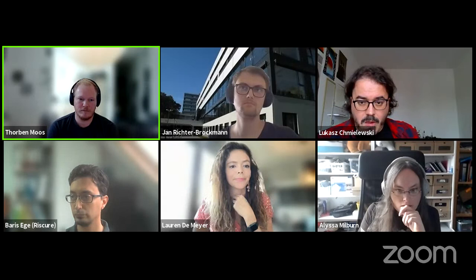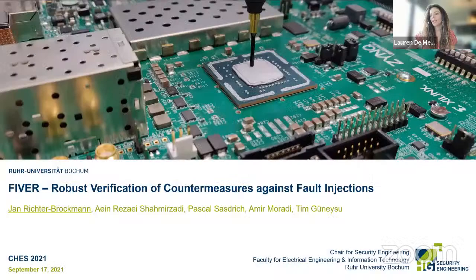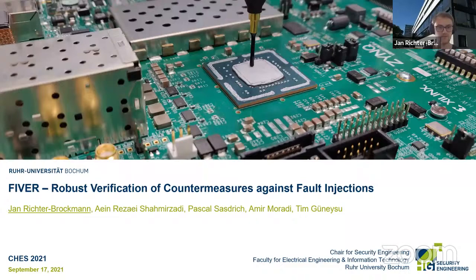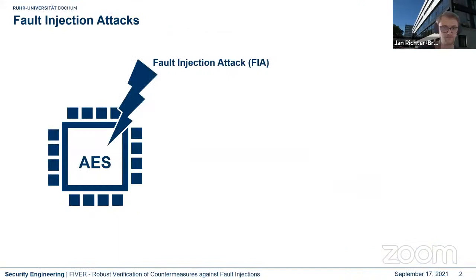Let's move on to the last talk of this session: 'FIVER — Robust Verification of Countermeasures Against Fault Injections,' a joint work of Jan Richter-Brockmann, Ein Rezaei Shamirzadi, Pascal Sasdrich, Amir Moradi, and Tim Güneysu. Cryptographic algorithms implemented on hardware devices like ASICs or FPGAs can be broken by fault injection attacks, and our community has come up with a blizzard of countermeasures. However, it's still an open question how we can verify such countermeasures. The state of the art is currently VERFI, proposed last year — the first automated open-source cryptographic fault diagnostic tool working on a gate-level netlist.